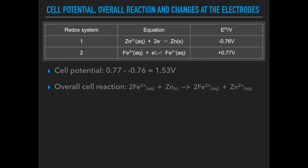So that gives us 2Fe³⁺(aq) will react with the Zn to make 2Fe²⁺ ions and Zn²⁺.